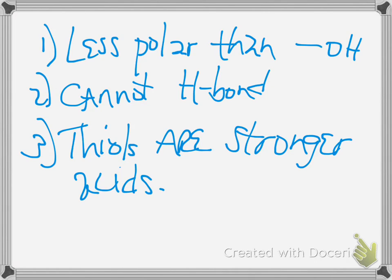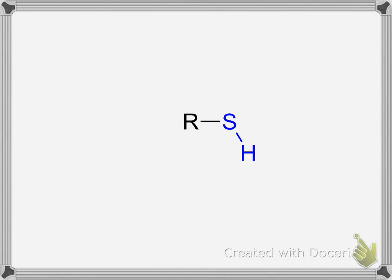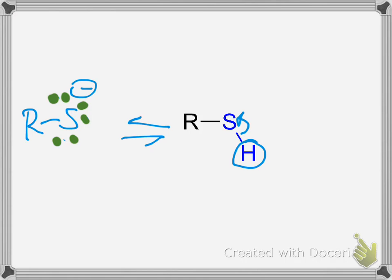What that really indicates is when we say a stronger acid, it's the ability for the sulfur to lose its proton yet retain the two electrons in order to form what's called a thiolate. A thiolate is negatively charged, and of course we have the proton that was donated to some other Lewis base.